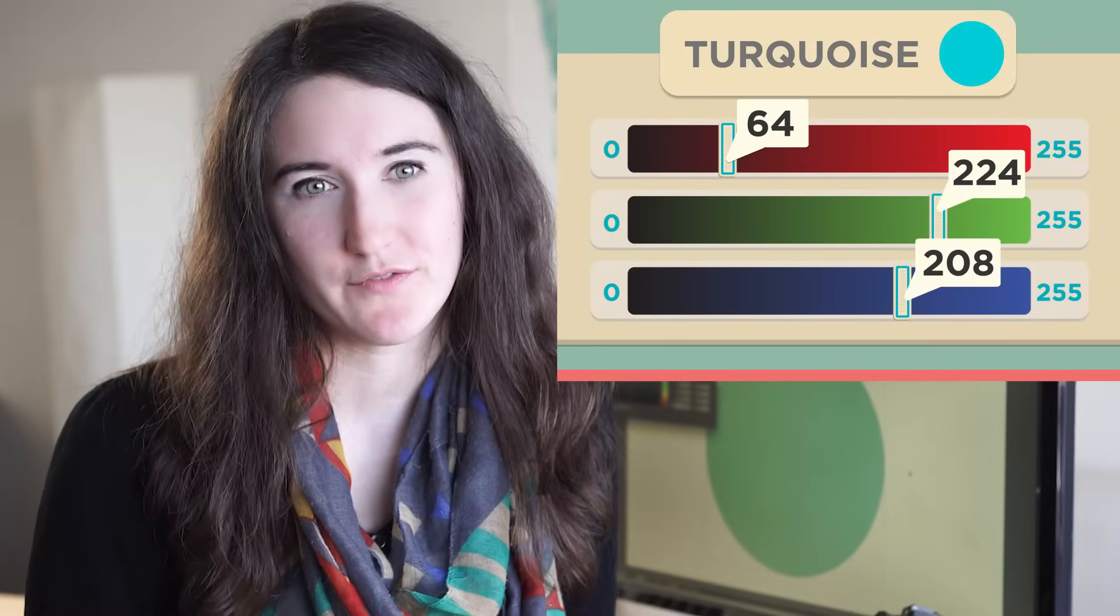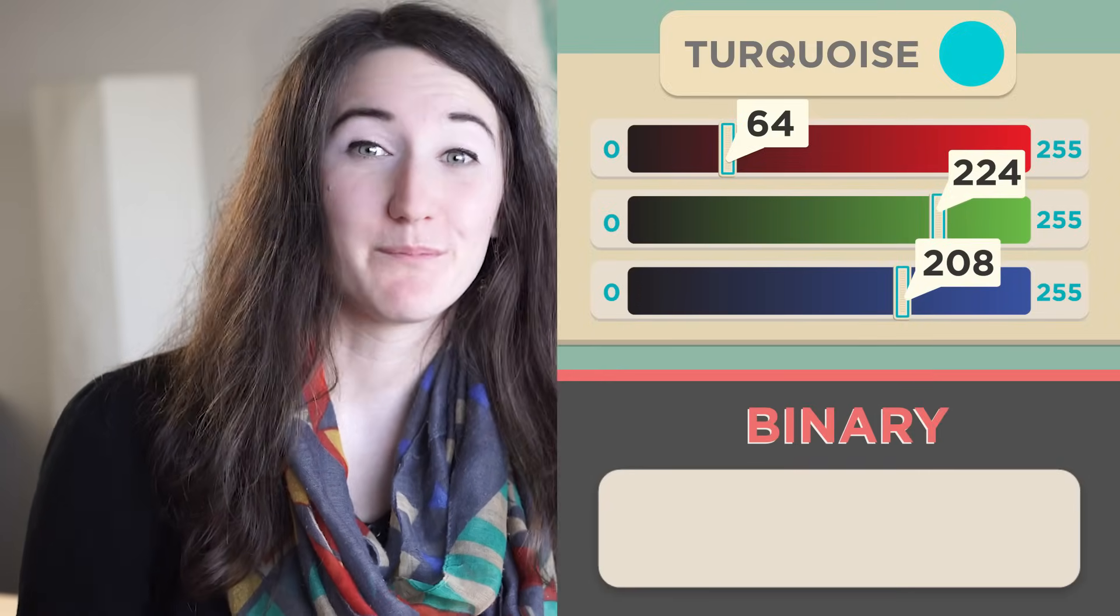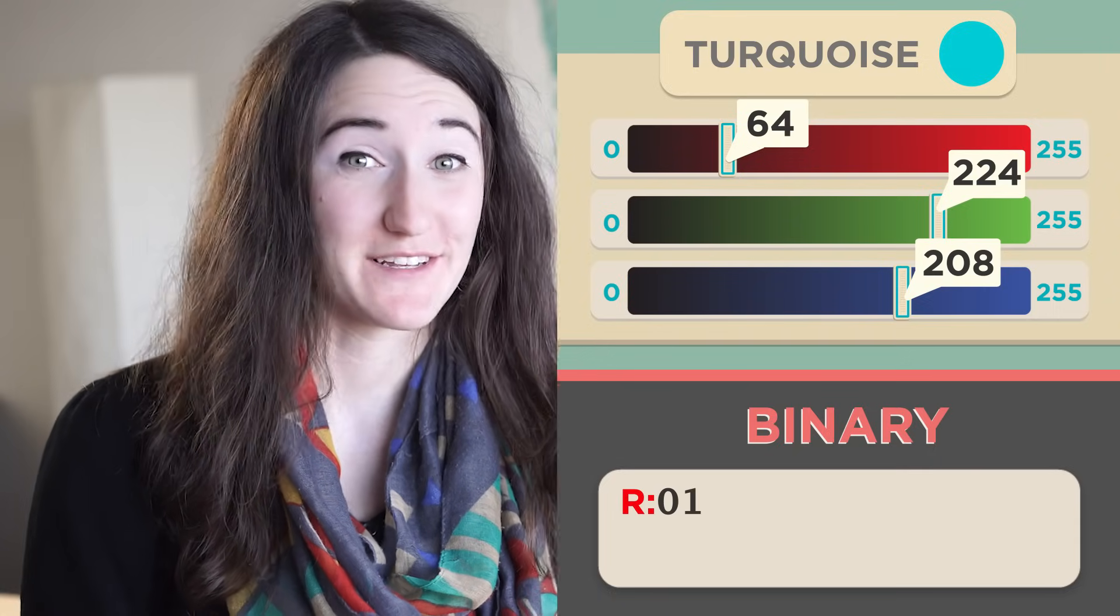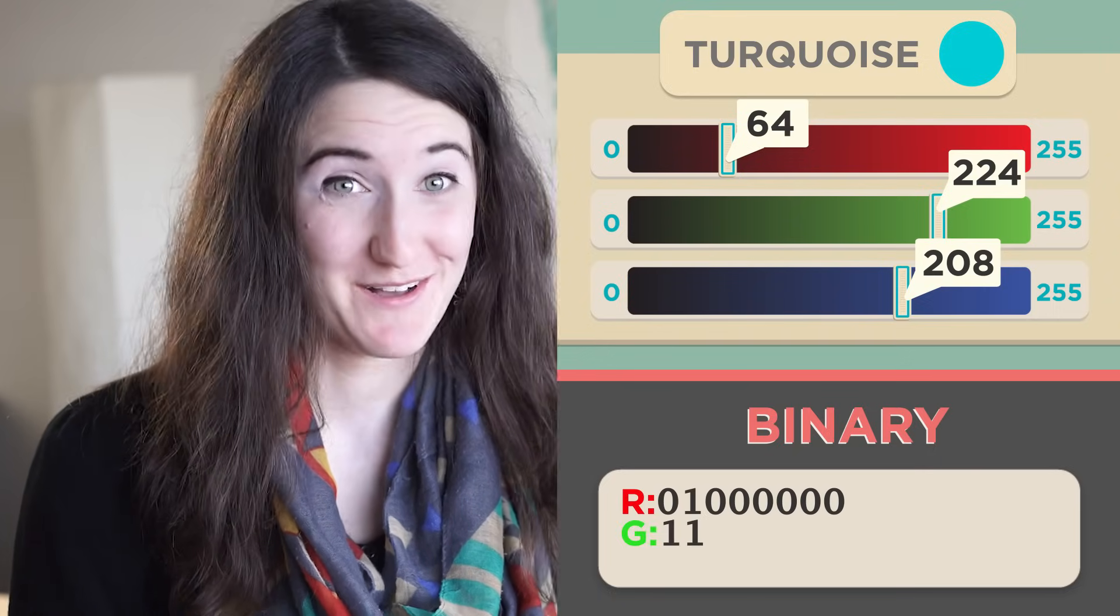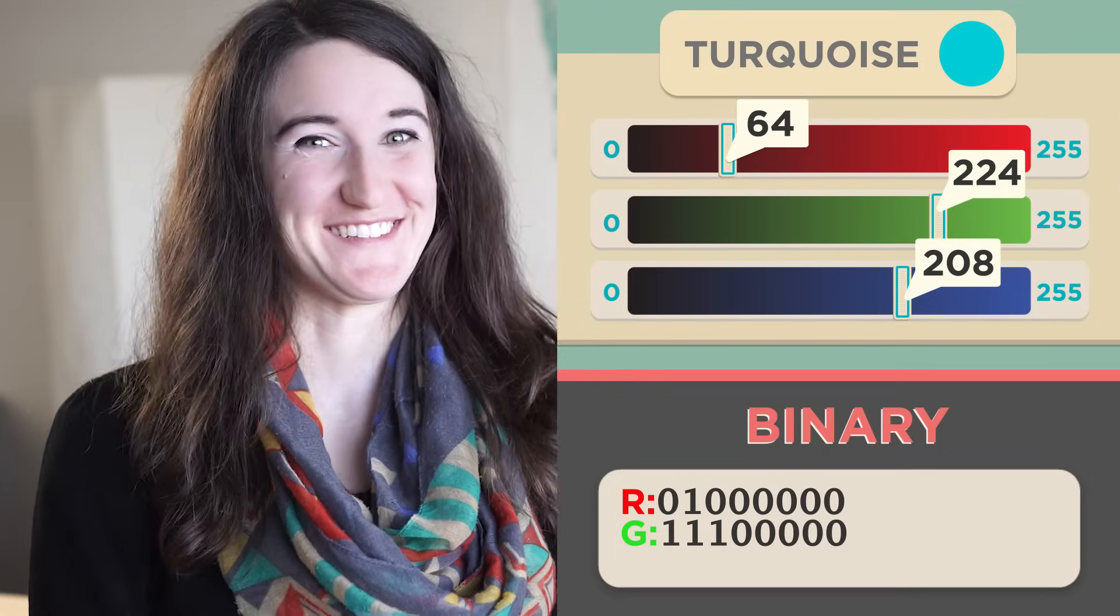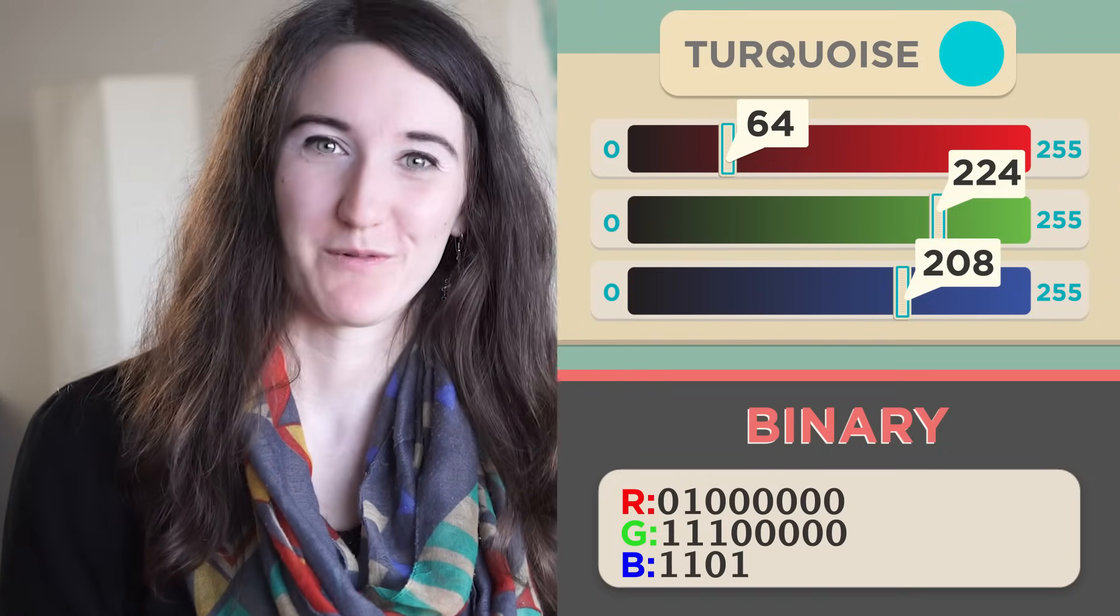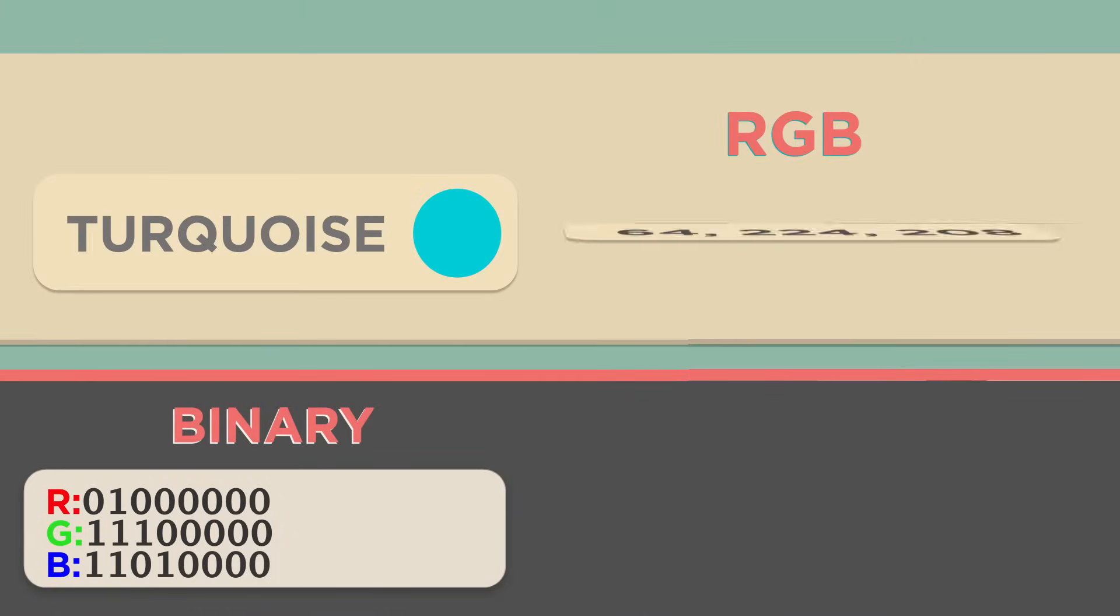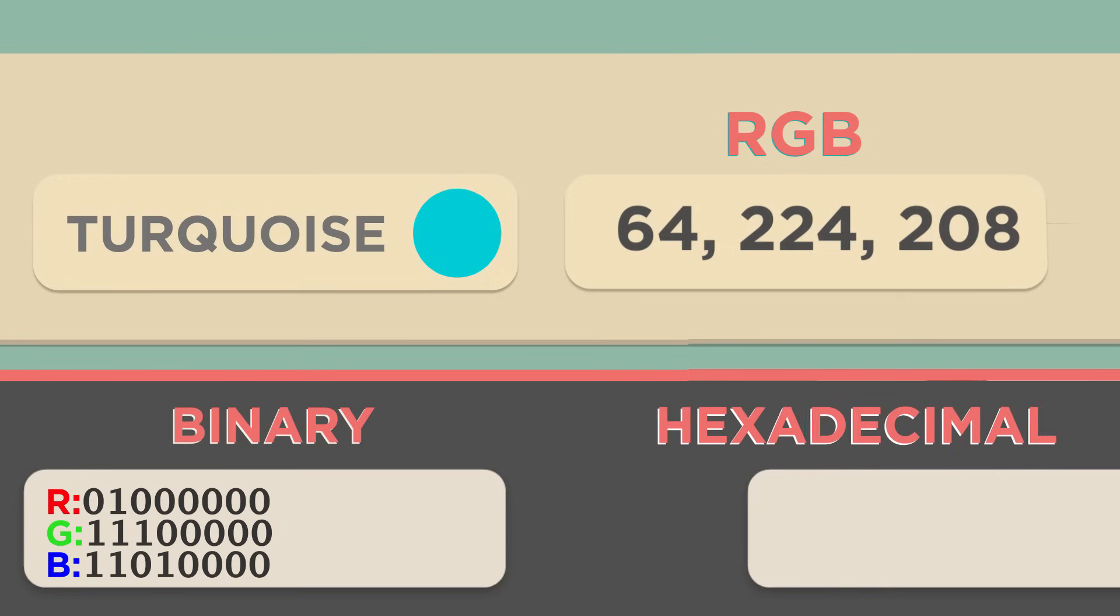But a computer would have stored it as 01000000 11100000 11010000. We use 24 binary digits to represent this one pixel.